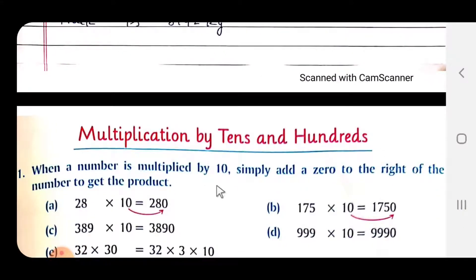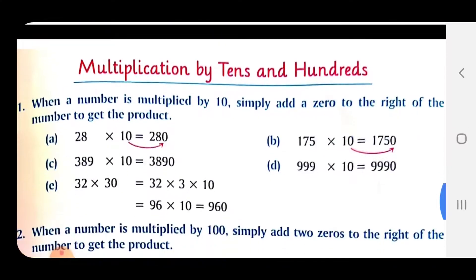Now multiplication by tens and hundreds. Rules: When a number is multiplied by tens, simply add a zero to the right of the number to get the product. Like 28 multiplied by 10, just add zero to the right: 280. 175 multiply by 10, add zero to the right. Here also see: 32 multiply by 30. 32 x 3 x 10. 32 and 3 multiply gives 96, and 10 multiply adds zero to the right: 960.